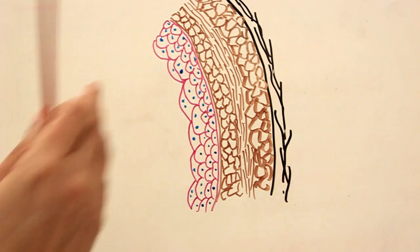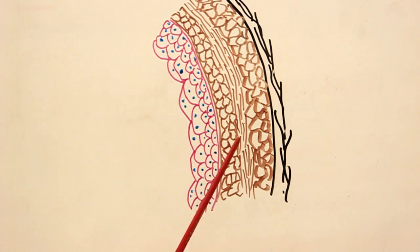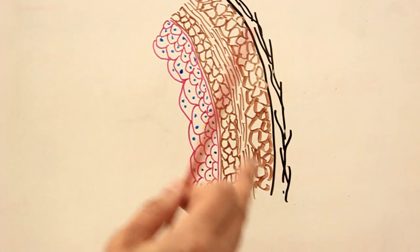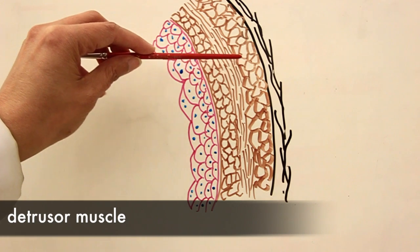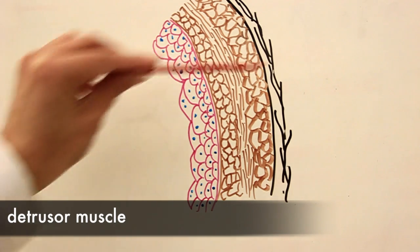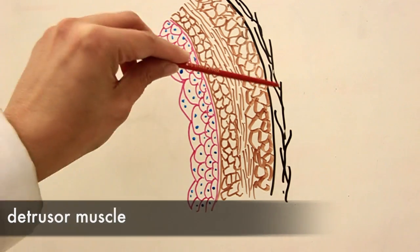While in the lower parts, the inferolateral surfaces, the adventitia is mainly loosely arranged connective tissue. Then we have the portion which is the thickest: the muscularis, or the muscular element of the wall. The muscle of the bladder is named the detrusor muscle.